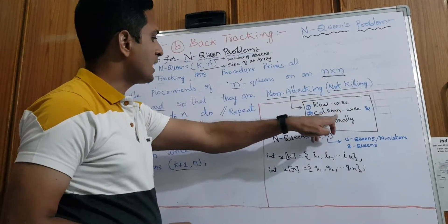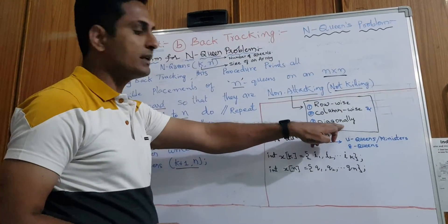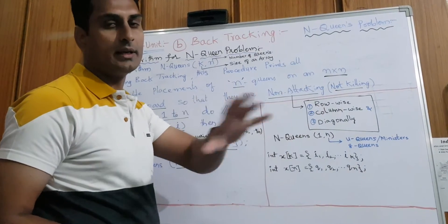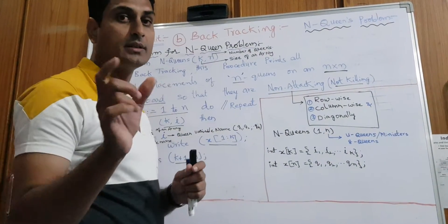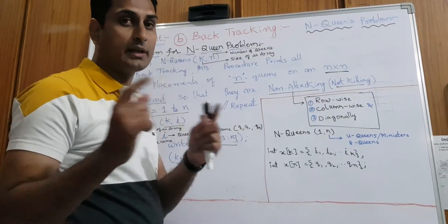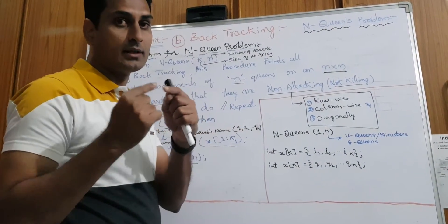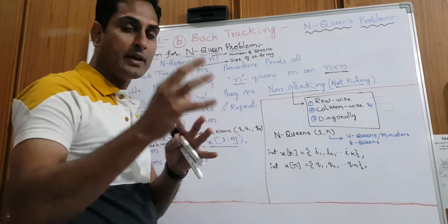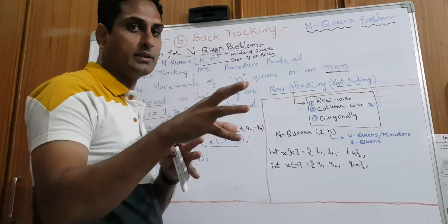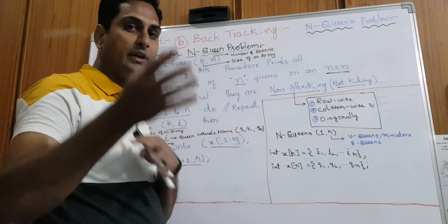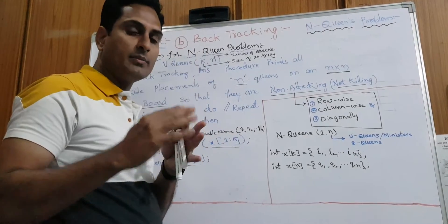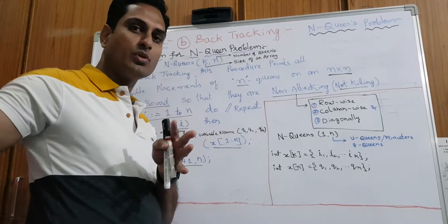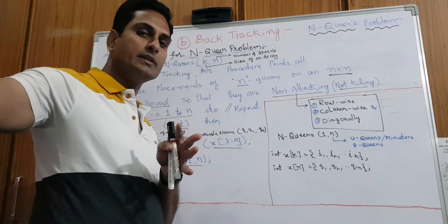Queens means ministers. We need to place ministers in an N by N chessboard. Row-wise, column-wise, and diagonal-wise, they should not attack — the queens should not kill each other. We need to place them in such a way that they do not attack each other, and for that we need to write the algorithm.